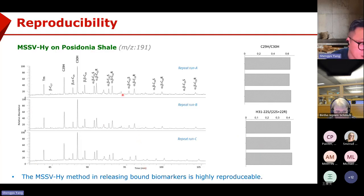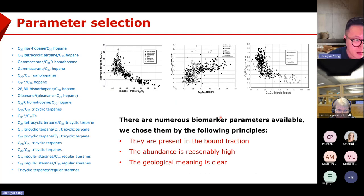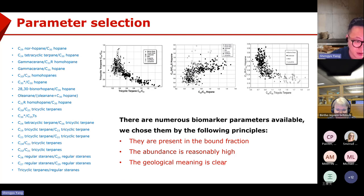We also tested the reproducibility of the method. We checked the Posidonia shale and used the same method in experiments on different days. These show very high reproducibility — the products are highly reproducible. Next, we want to compare some parameters. If we open the biomarker guide, there are a lot of parameters, and we select those where the compounds are present in the bond fraction, their abundance is relatively high, and the geological meaning is clear.